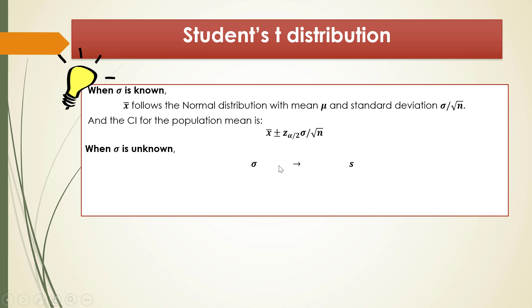In this video, we will learn that when sigma is unknown, we will use an estimation of sigma, which is s. Here, sigma is the population standard deviation, and s is the sample standard deviation. Since we don't know sigma, we use s to replace sigma. And when sigma is unknown, the standard normal distribution is not applicable, so we need another distribution: the student t distribution.